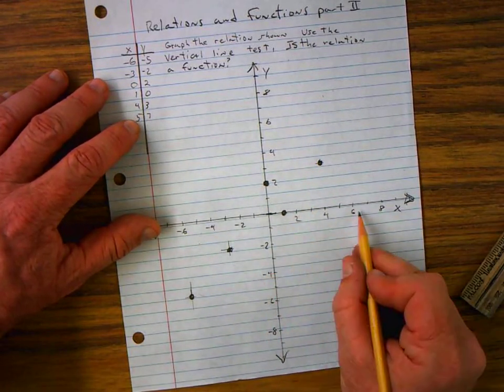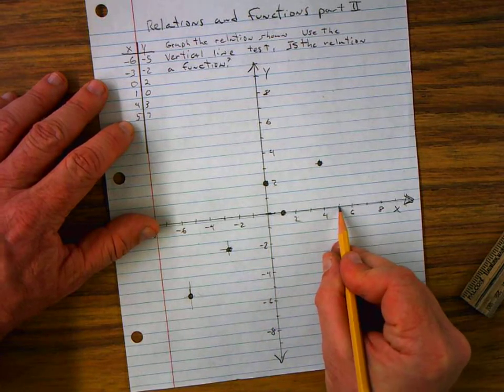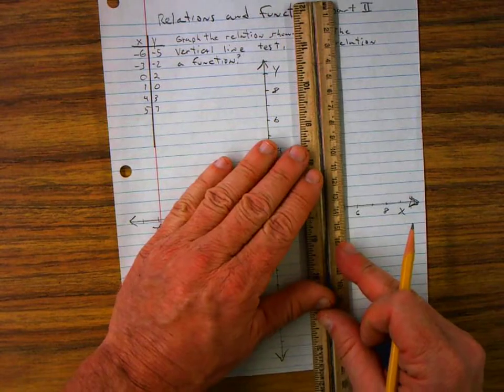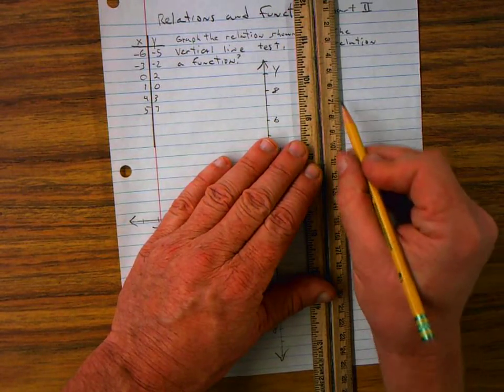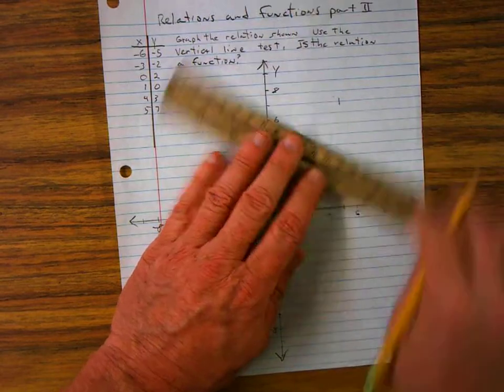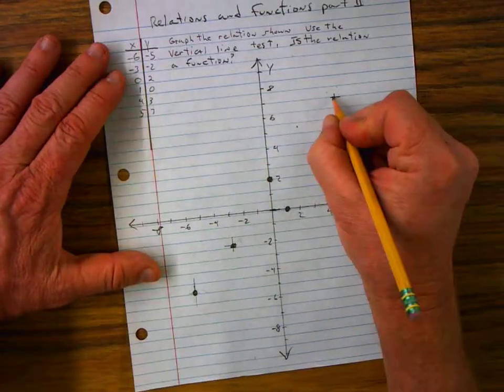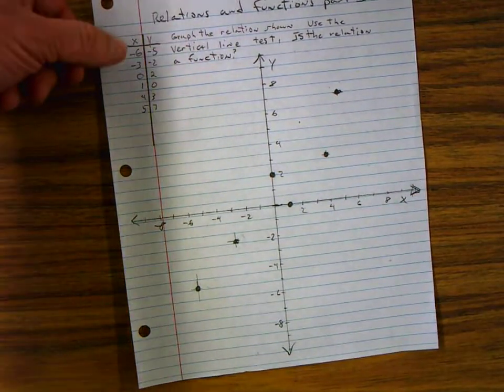The last ordered pair is 5, 7. So I go X over 5. And Y is 7. So I go up 7. And 1, 2, 3, 4, 5, 6, 7. Okay. That's my next ordered pair plot. So now I've graphed the relation shown. Those are all the points that represent the ordered pairs.